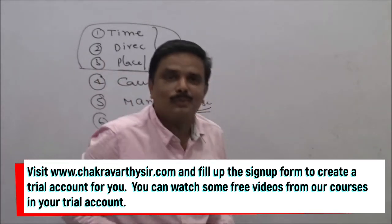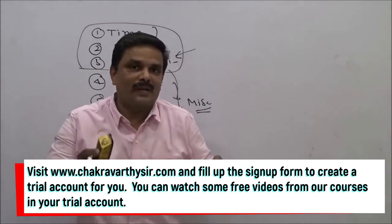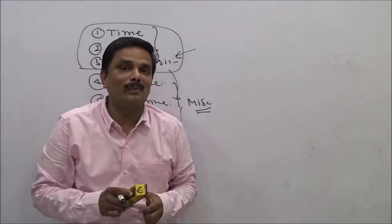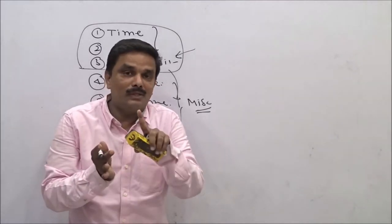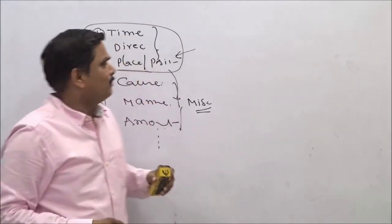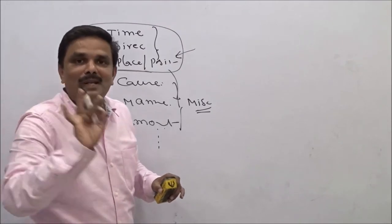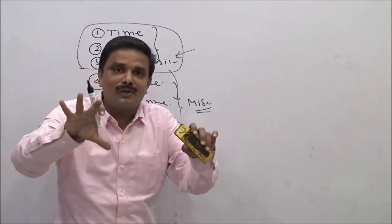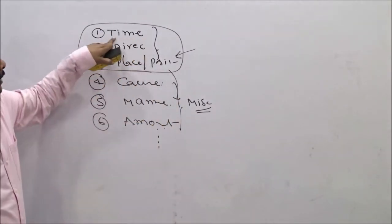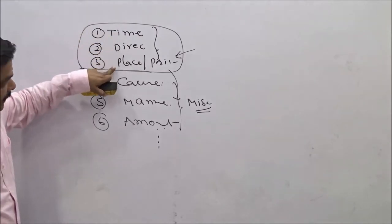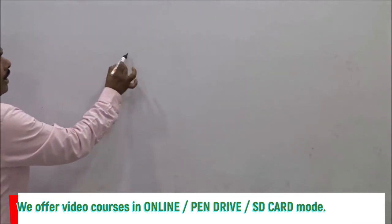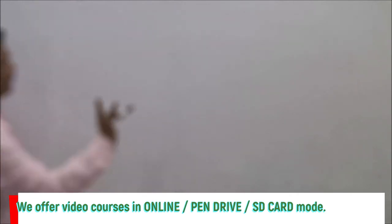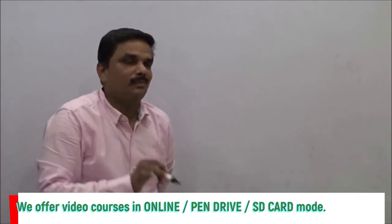Most students are getting confused using prepositions. For example, a student sent me a mail just yesterday saying he was confused among 'jumped over,' 'jumped into,' and 'jumped off.' Let me give you a clear idea first. Jumped over means: suppose there is a chair and a cat jumps from one side to the other without touching the chair — that is called 'jumped over.' The cat jumped over the chair.